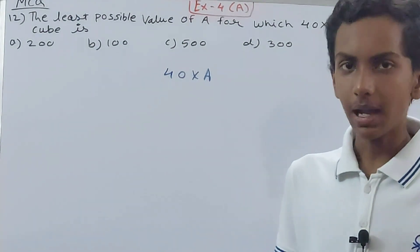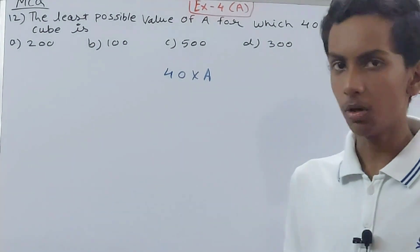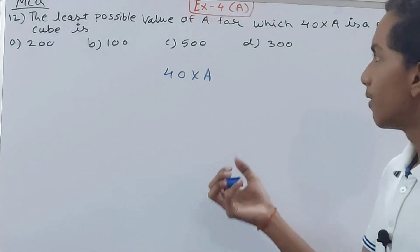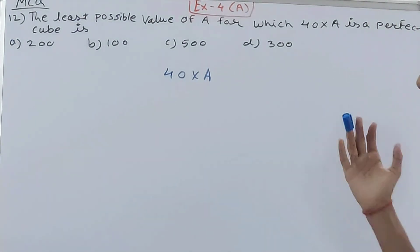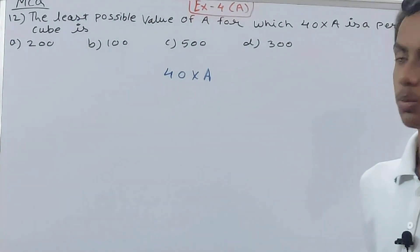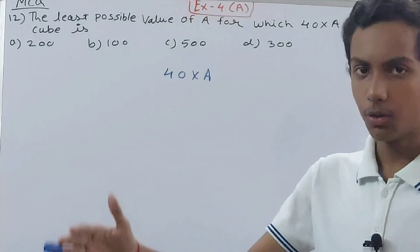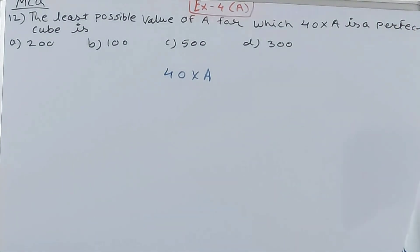But there is a condition that the value of A has to be the smallest. So we have 200, 100, 500 and 300. Out of these the smallest one is 100, then 200, then 300 and 500.